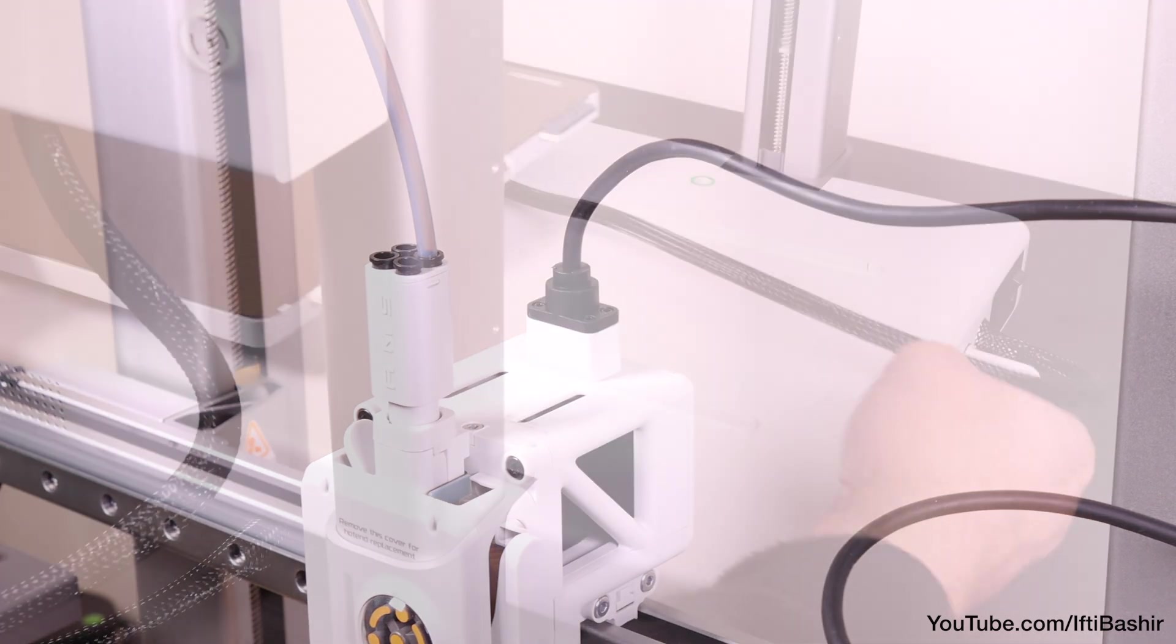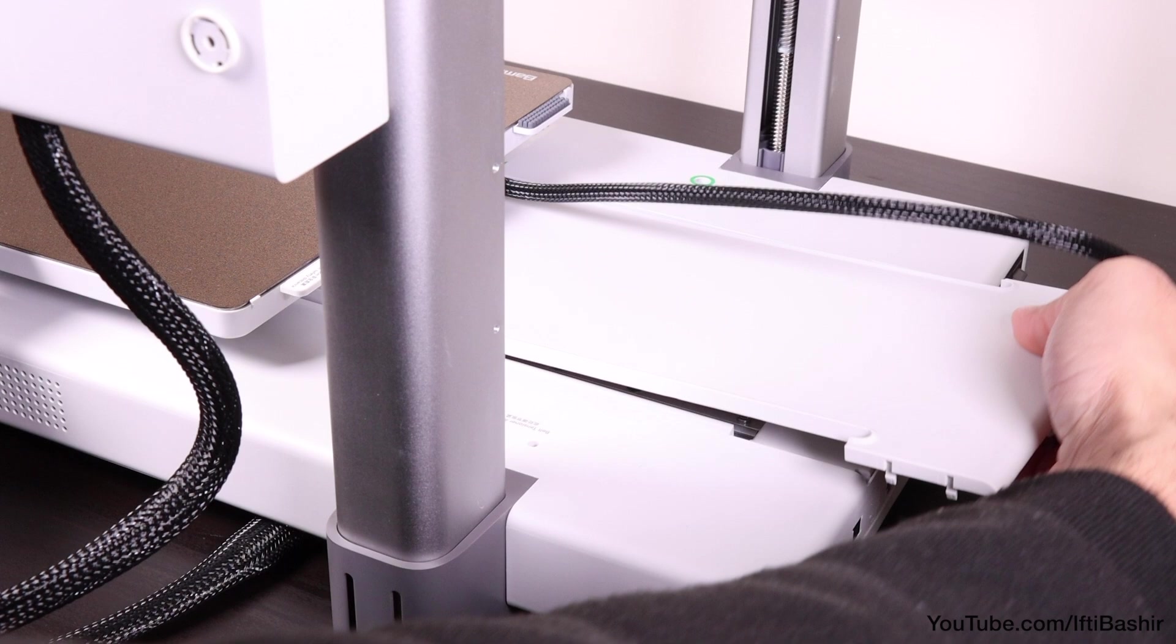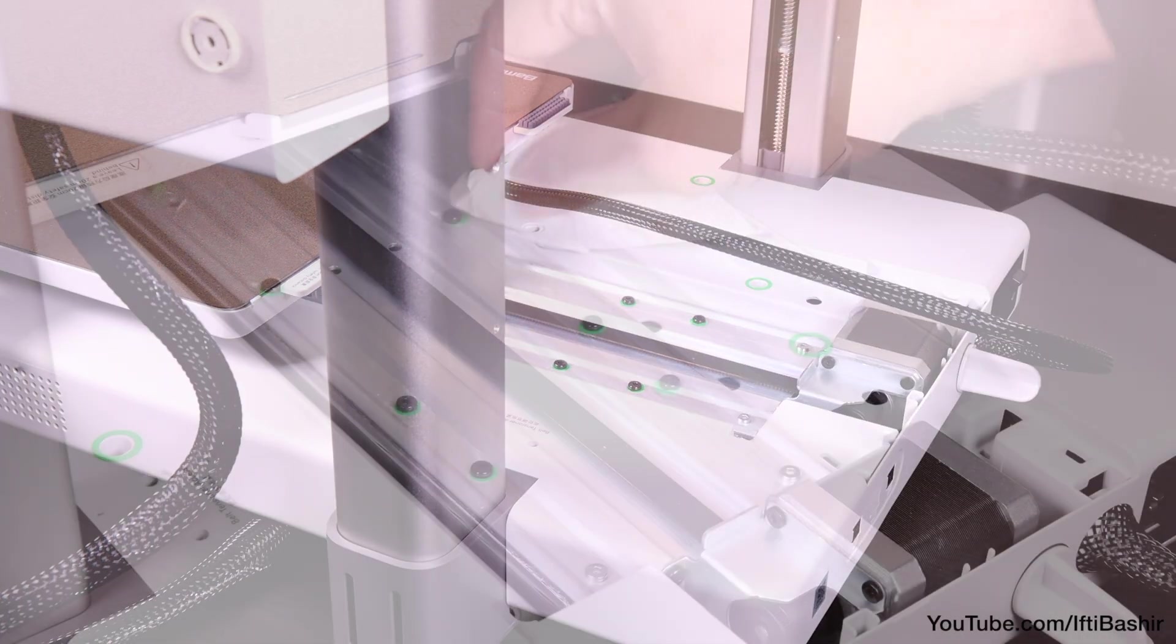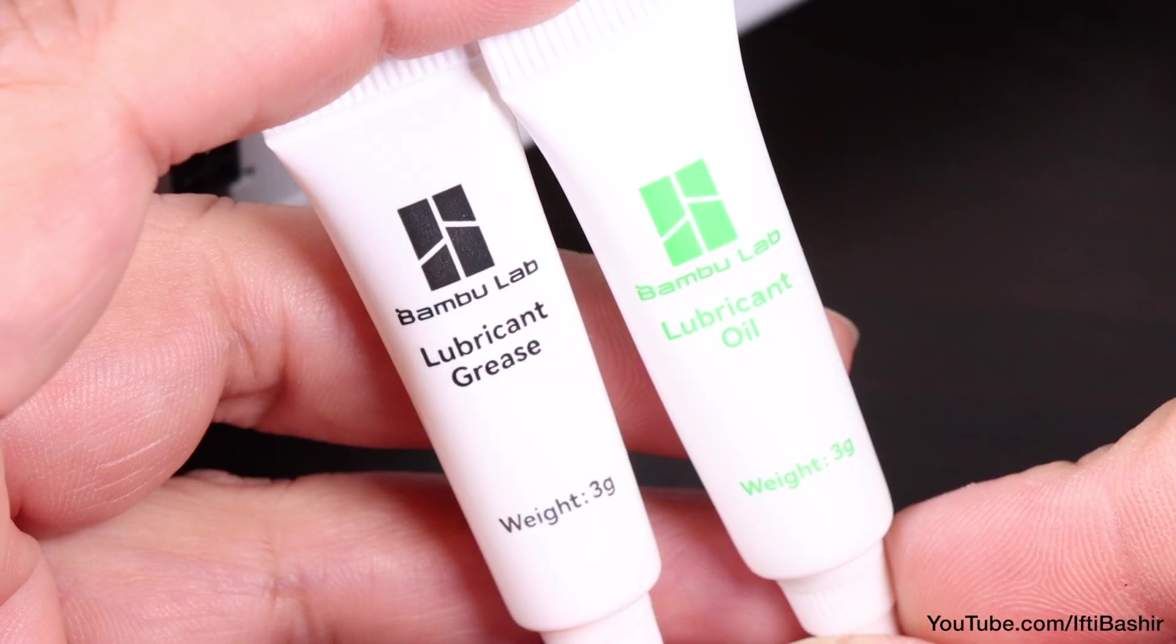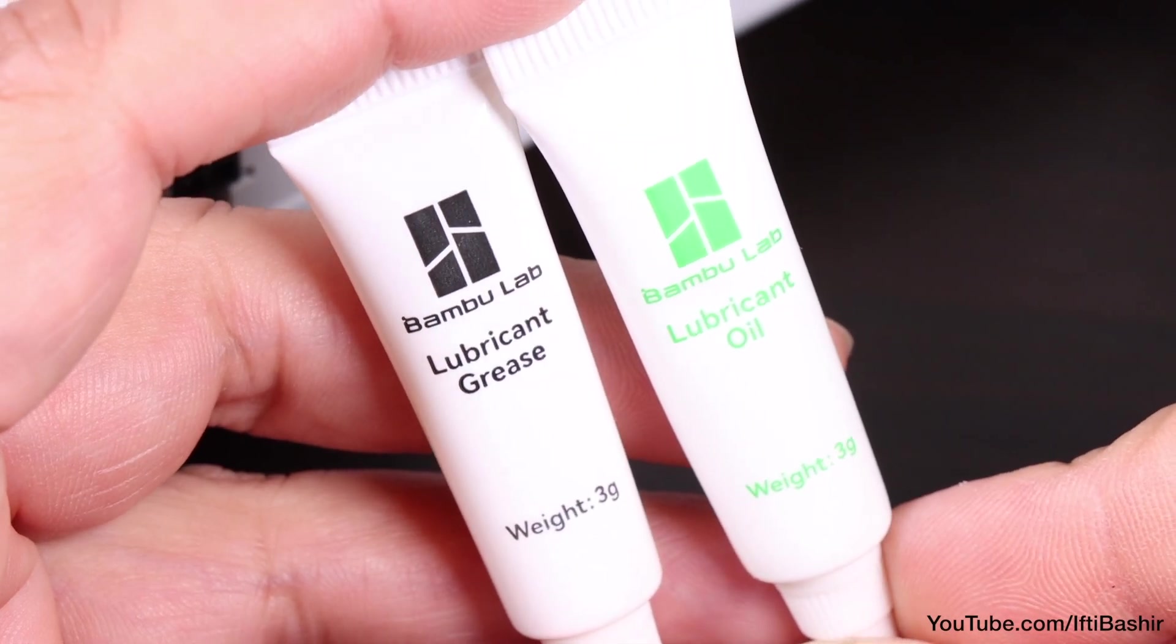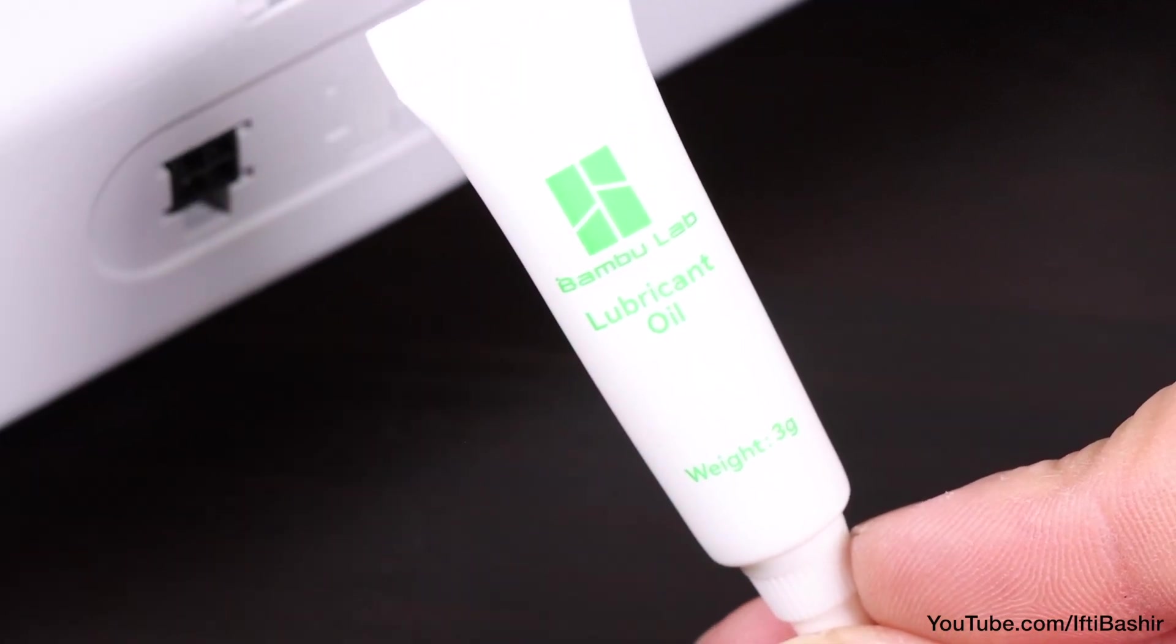Before going any further, it's a good idea to lubricate the Y-axis rails, located beneath the bed plate that can be easily removed. Use a paper towel to wipe the rails on both sides before applying oil. Note that both oil and lubricant grease are supplied with the kit. It's the oil we need to use for this step.